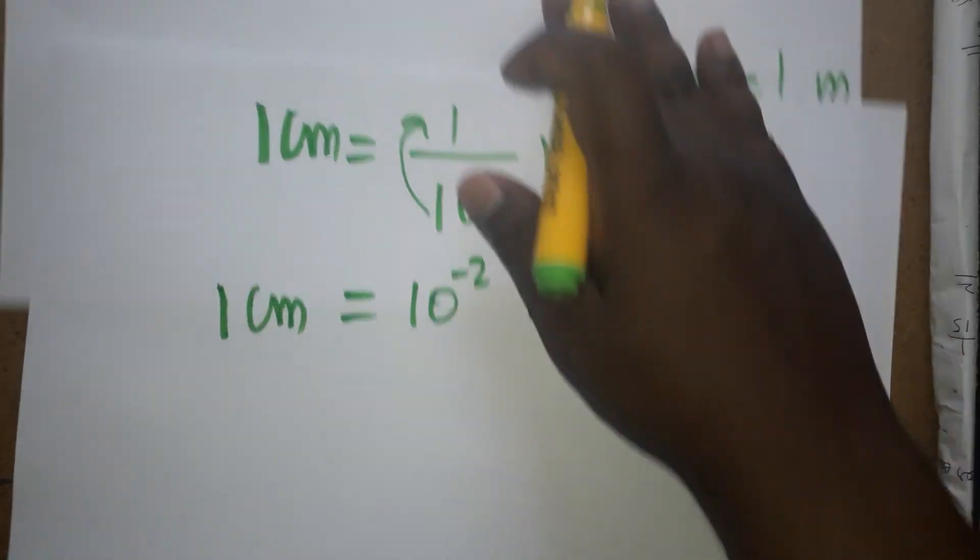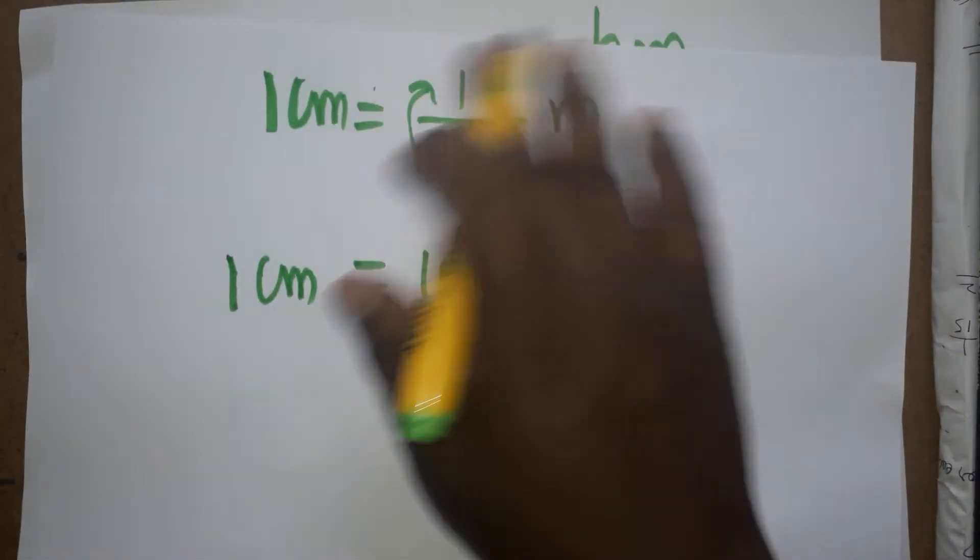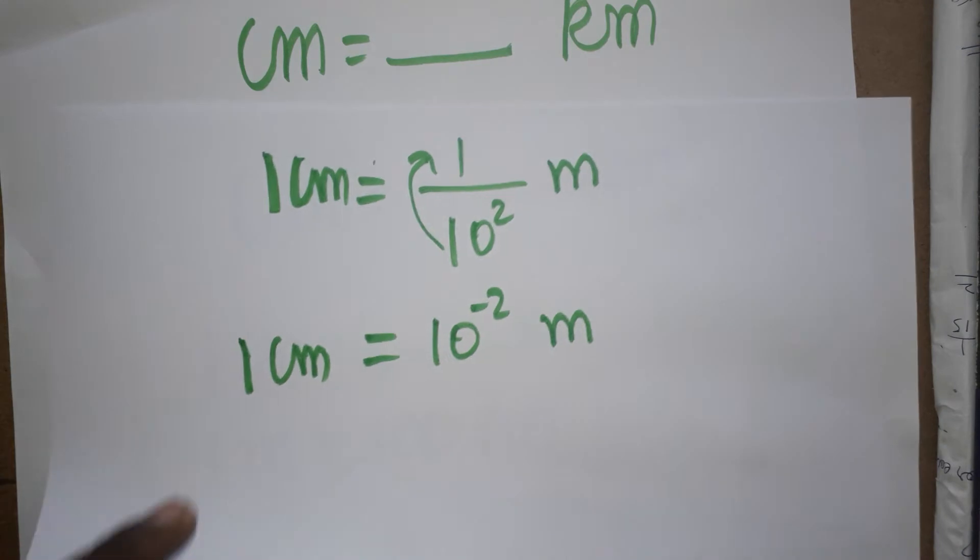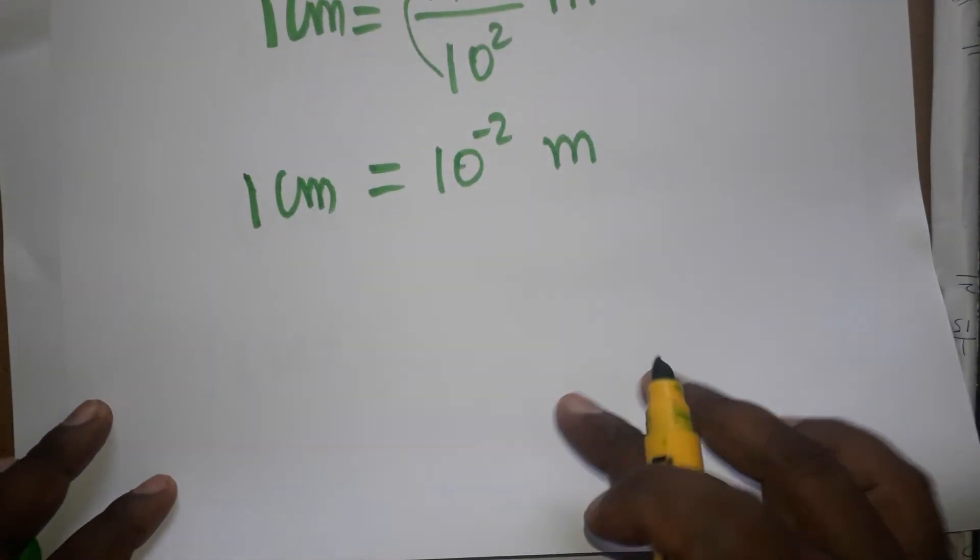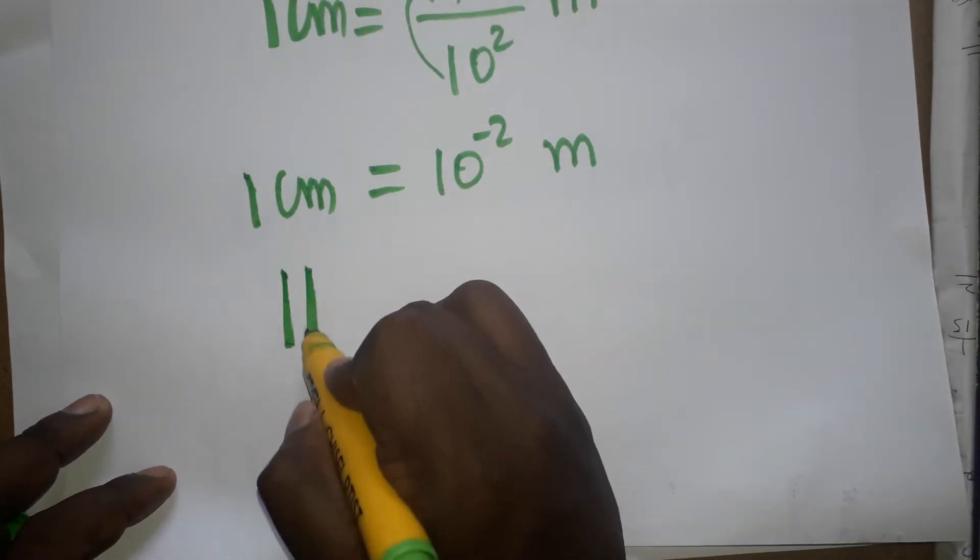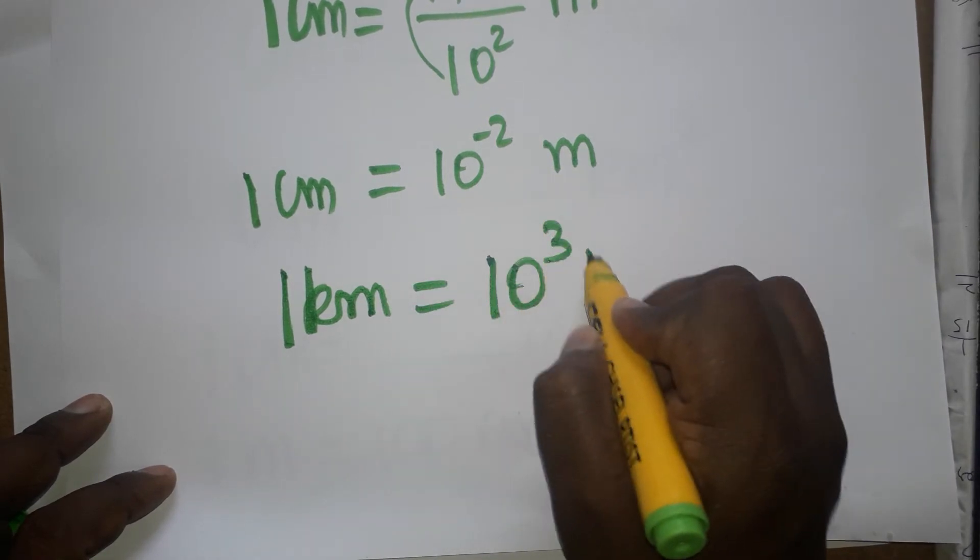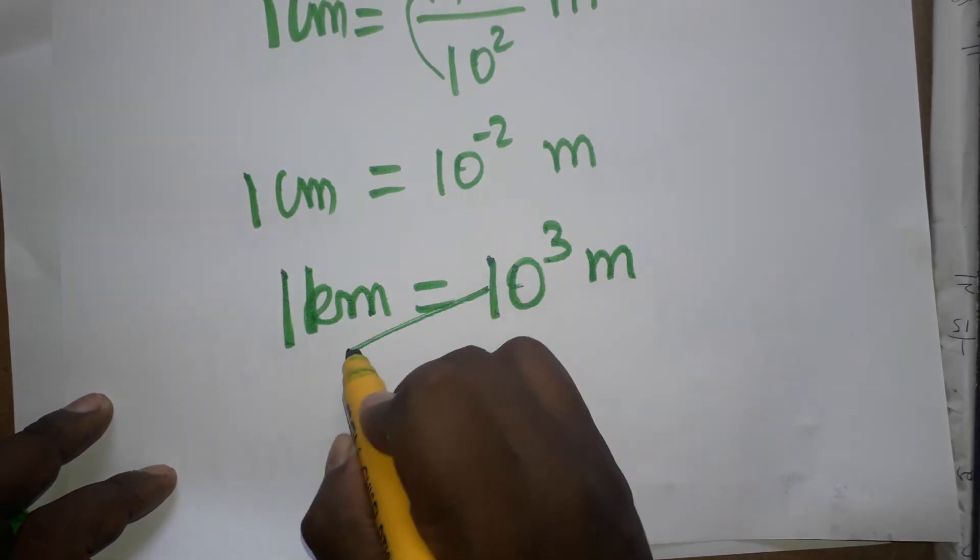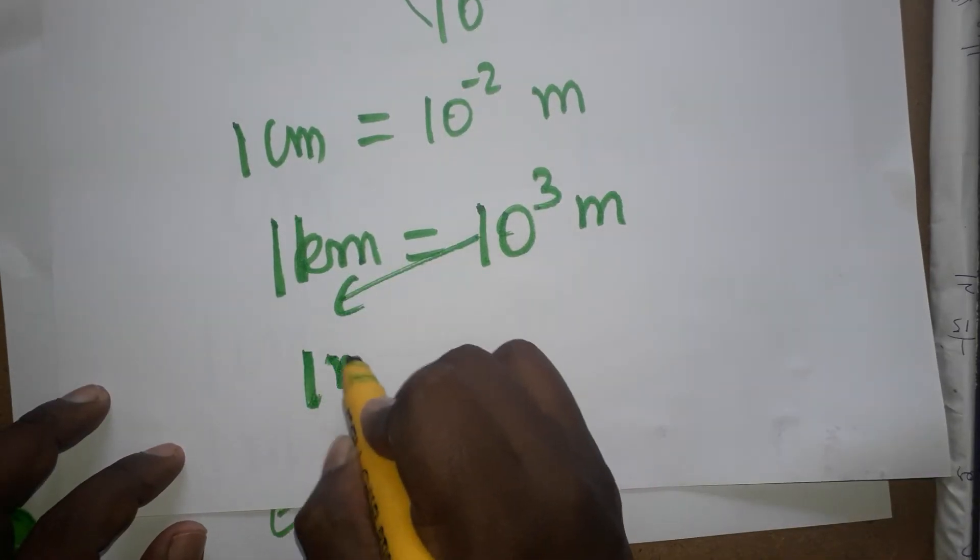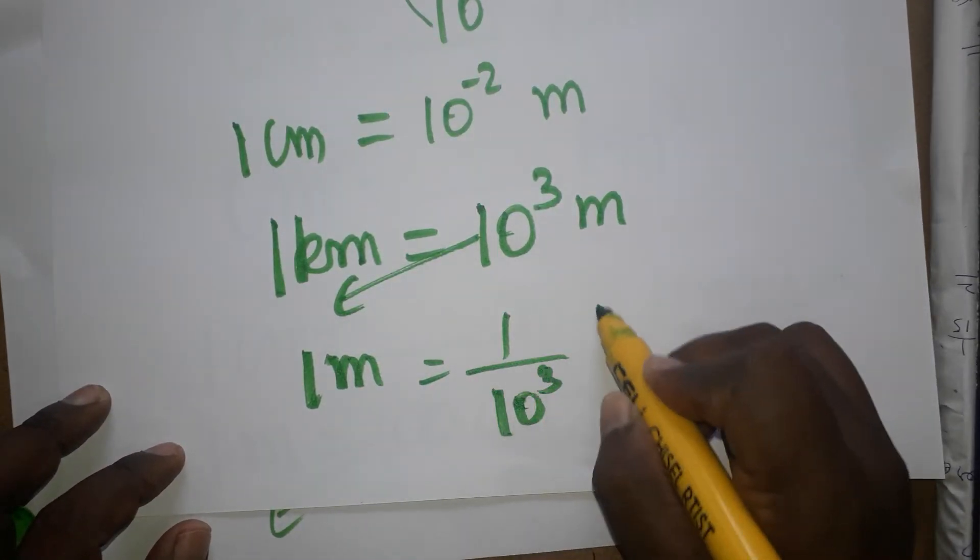We are having cm to km conversion. So far we converted cm to m. Again, 1 km is 1000 m. 1000 we can write as 10 power 3 m. So this 10 power 3 I am bringing here. So 1 m is 1 divided by 10 power 3 km.